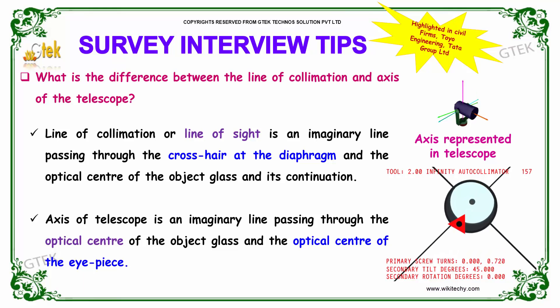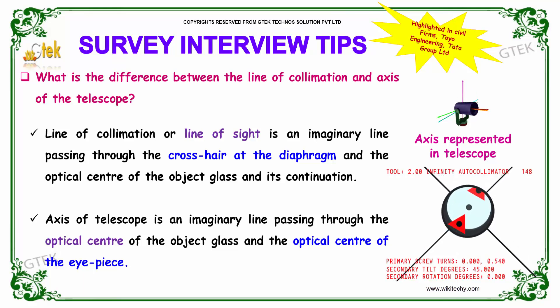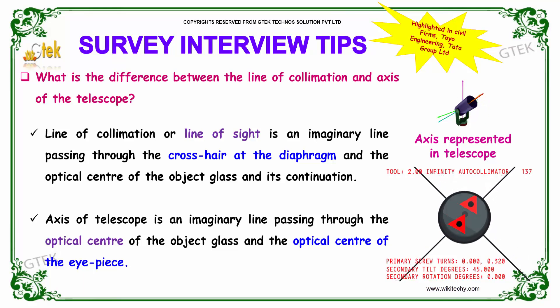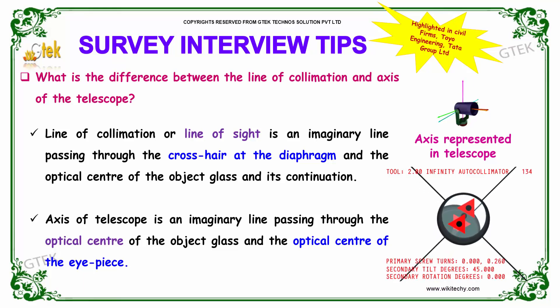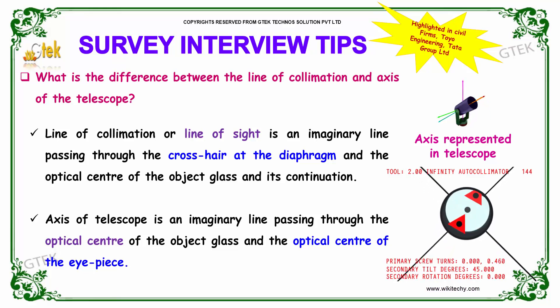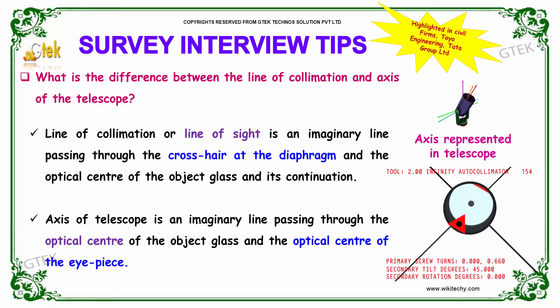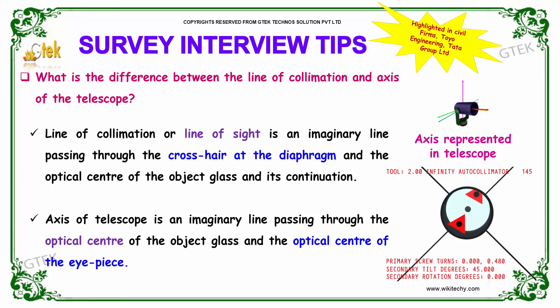What is the difference between the line of collimation and the axis of telescope? The line of collimation, or line of sight, is an imaginary line passing through the crosshair at the diaphragm and the optical center of the object glass and its continuation.